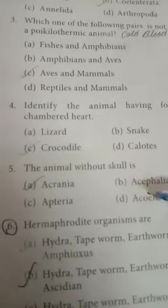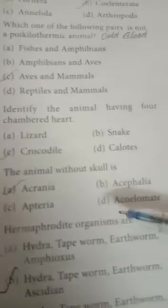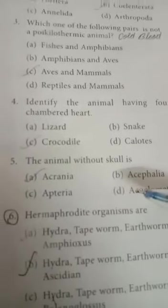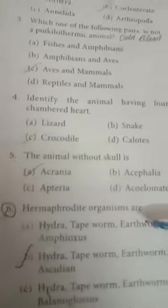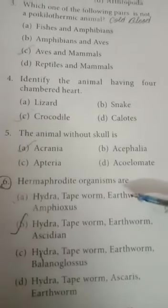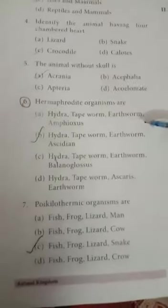That animal without a skull is called Acrania. Cranium means having a skull, and acrania means without a skull. Next, hermaphrodite organism — hermaphrodite means male and female sex organs are present in the same organism. Examples include hydra, tapeworm, earthworm, and Ascidian.